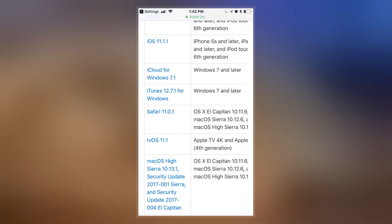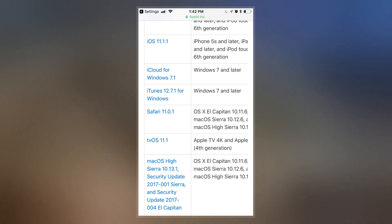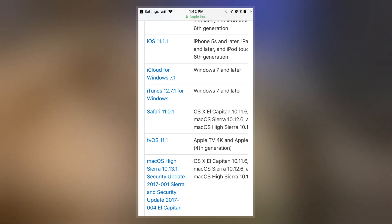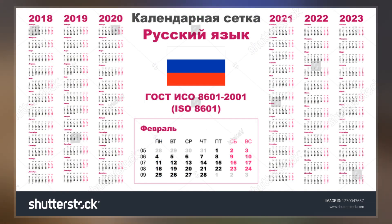The purpose of this standard is to provide an unambiguous and well-defined method of representing dates and times so as to avoid misinterpretation of numeric representations of dates and times, particularly when data is transferred between countries with different conventions for writing numeric dates and times.